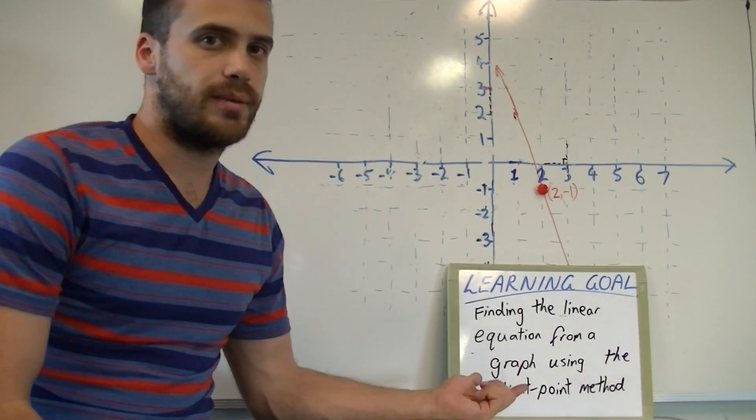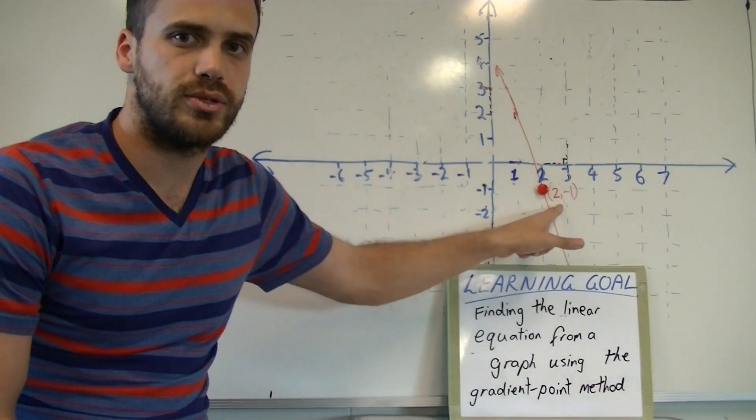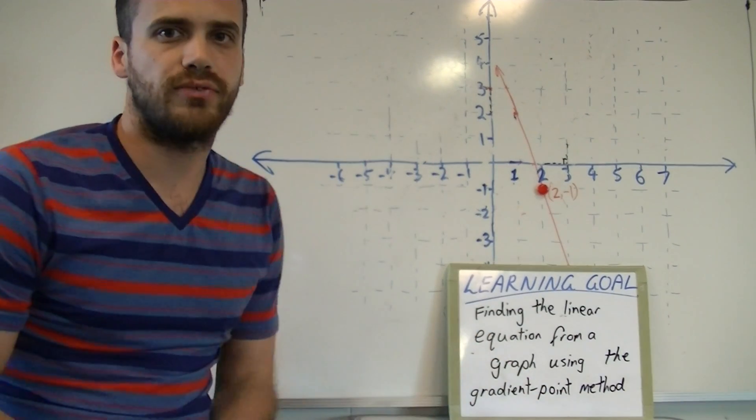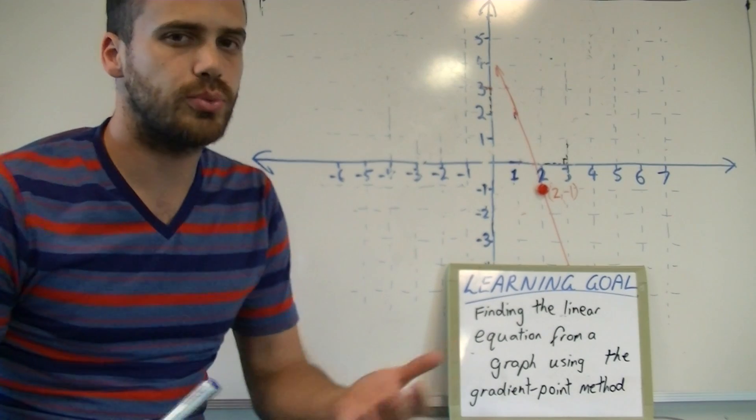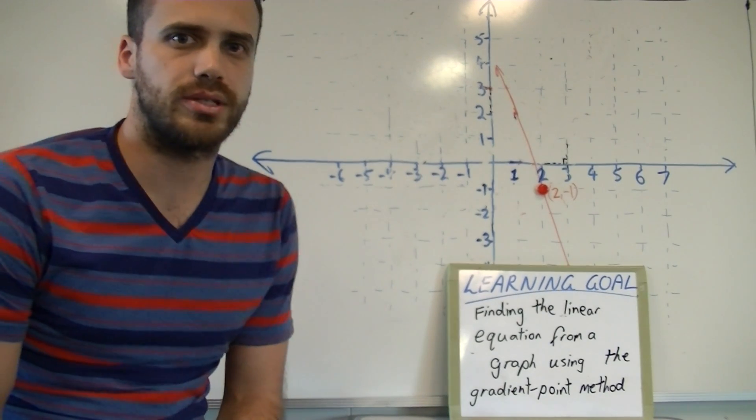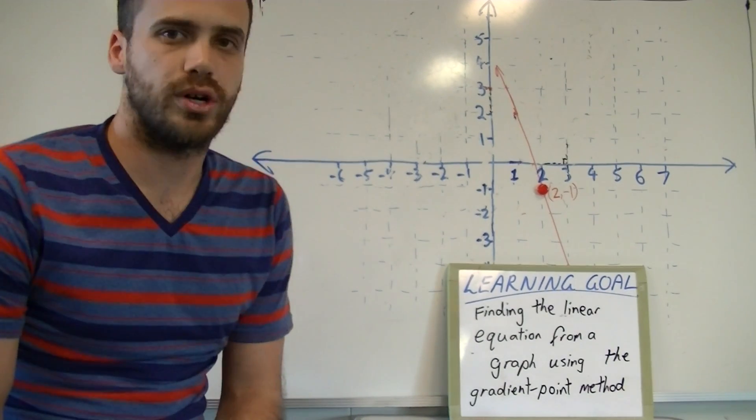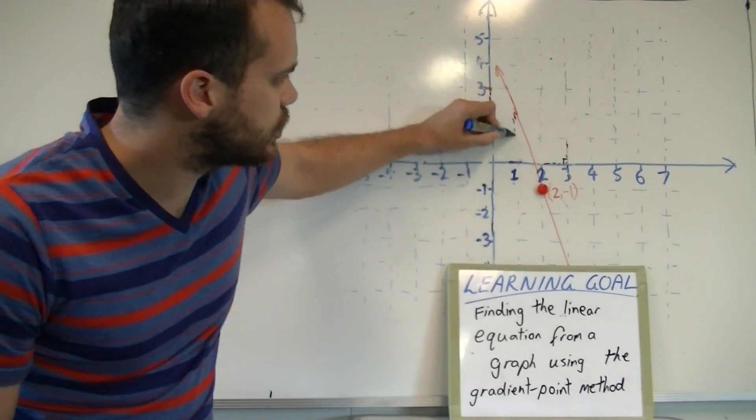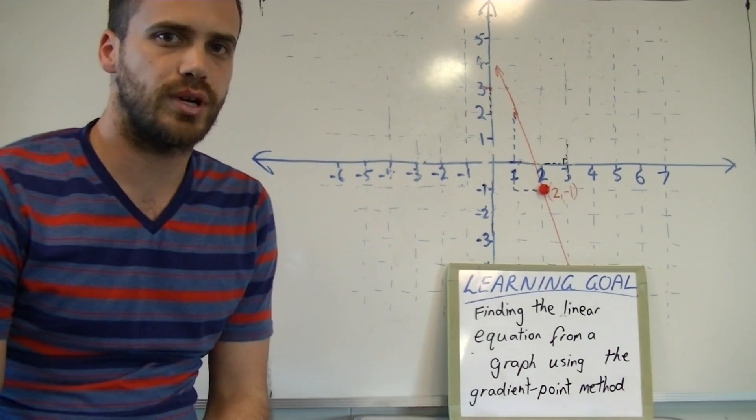You need to know a point, here's our point, and you also need to find the gradient. You can use y2 minus y1 over x2 minus x1 or you can use rise over run. Just to move this along a little quickly, I'm going to use rise over run.